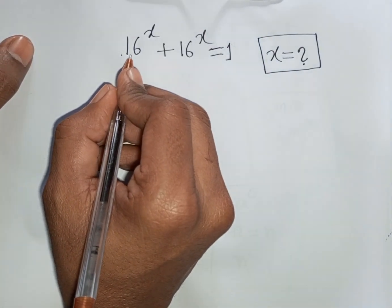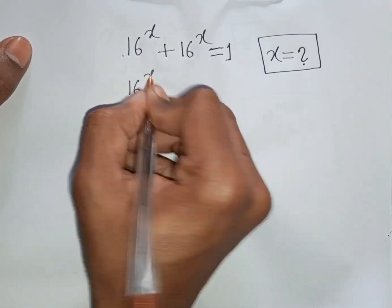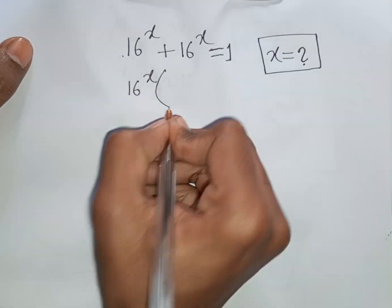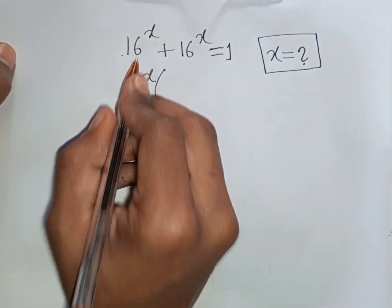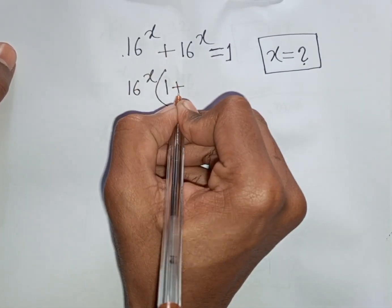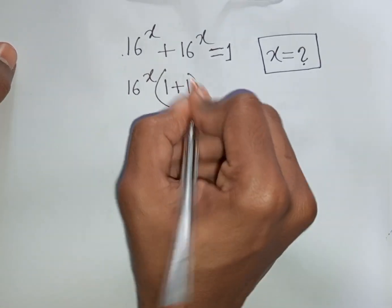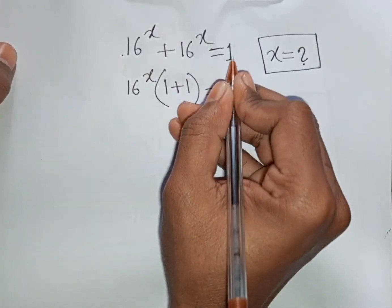We see 16^x is common, so take 16^x out of the bracket. This divided by this is 1, plus this divided by this is 1. The bracket closes, equals 1.